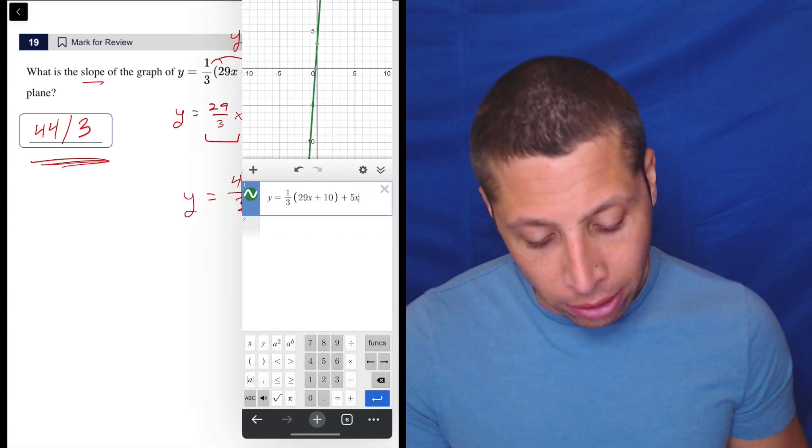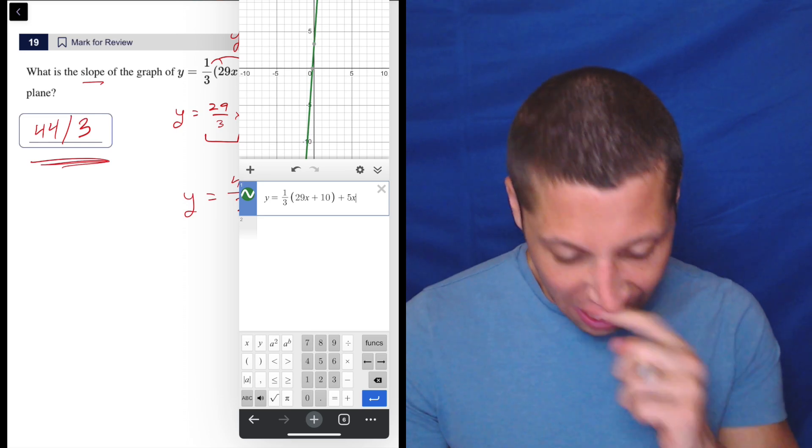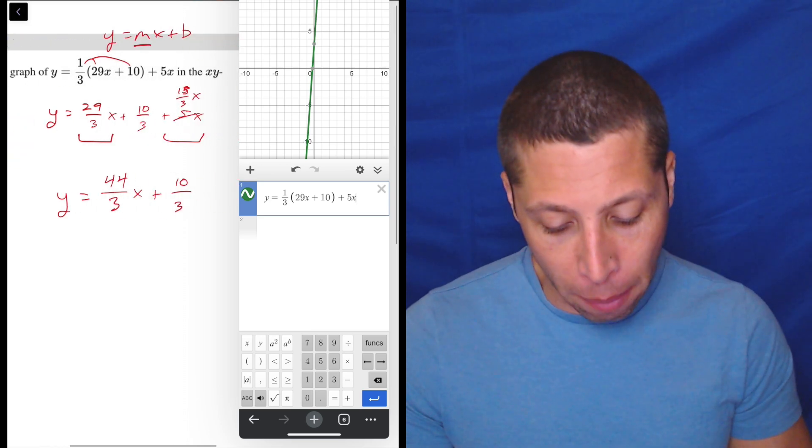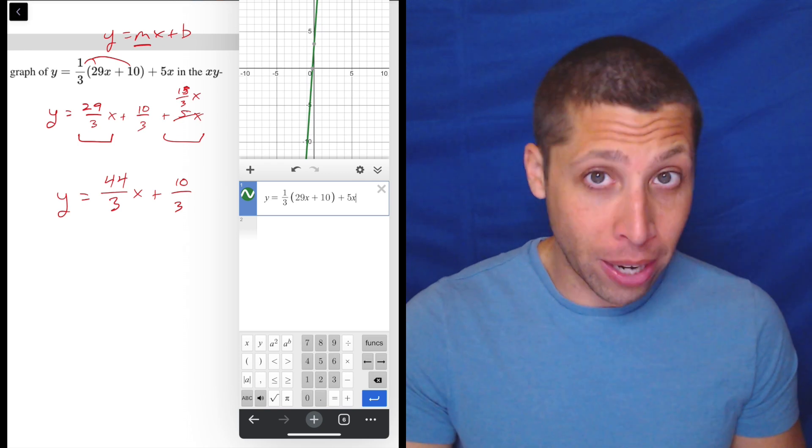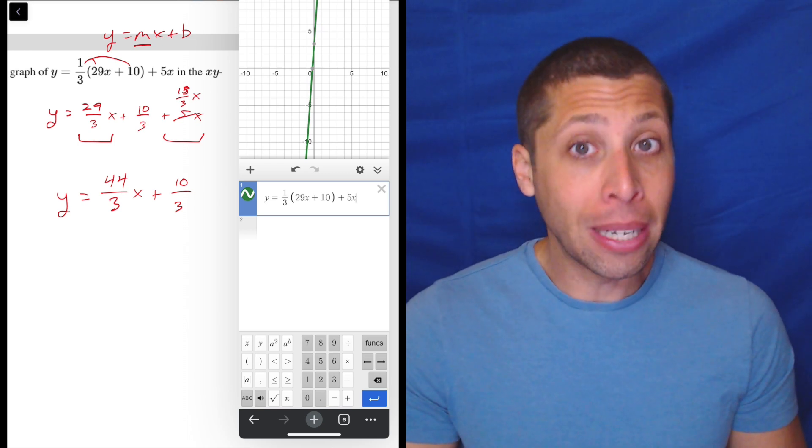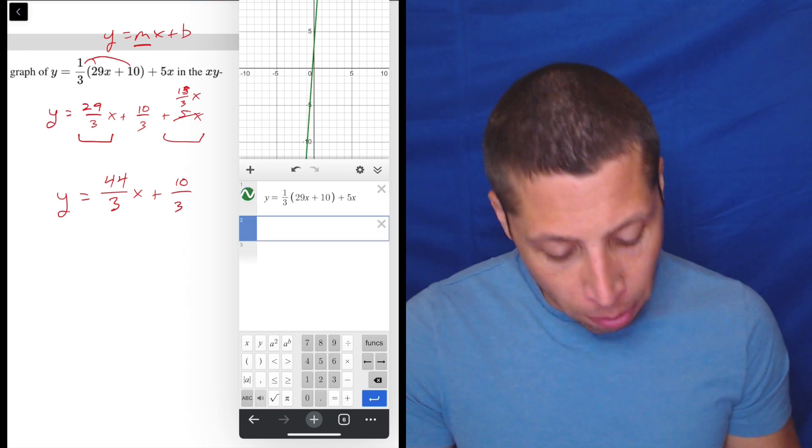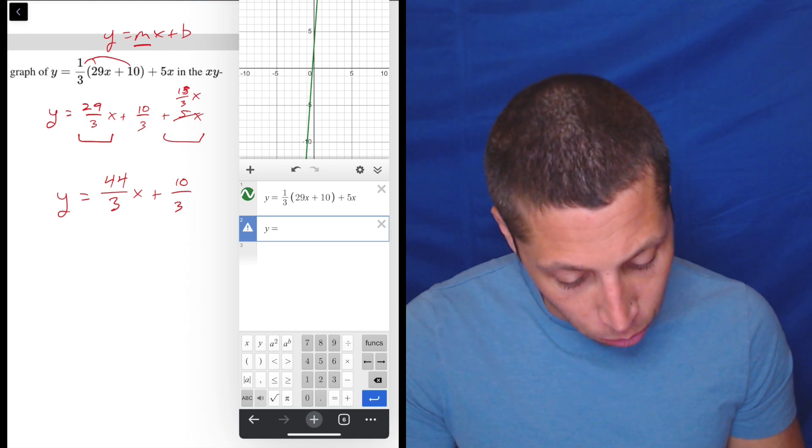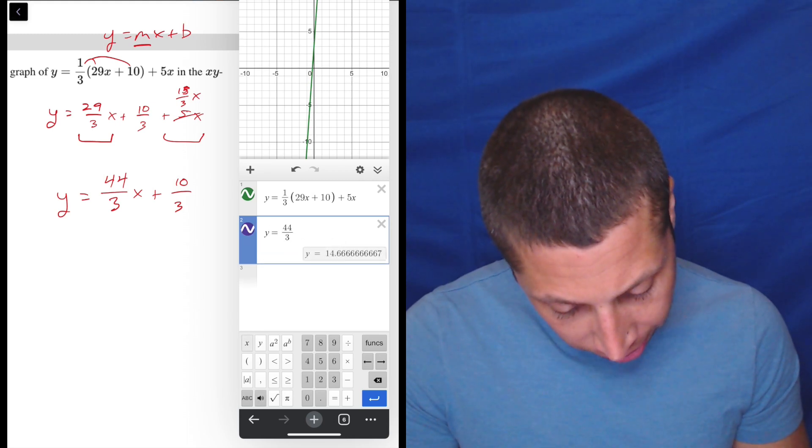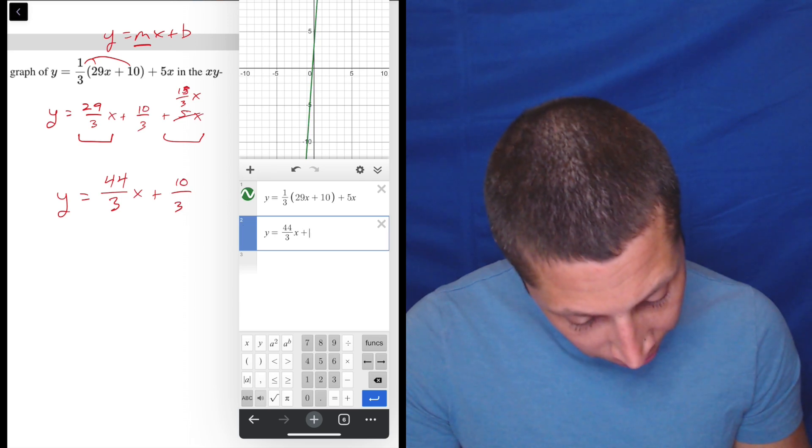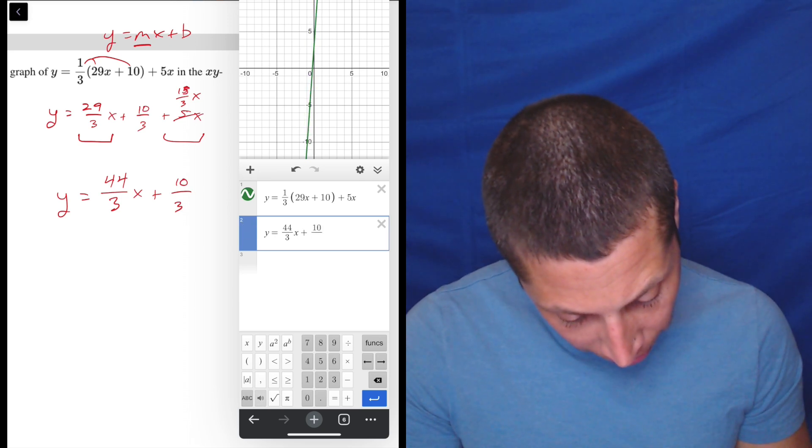But I do want to use my calculator to double check that I didn't mess up the algebra. This is where it would come in, because I have an equation of a line. In theory, it's supposed to be the same equation. I rearranged it, but it's supposed to produce the same line. So what I would do here is I would just on a new line, enter what I got. So equals 44 divided by 3 x plus 10 divided by 3.